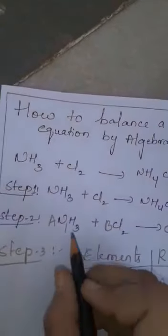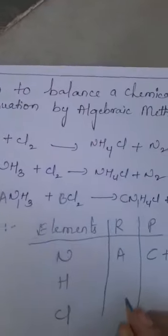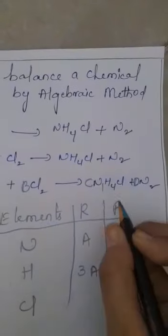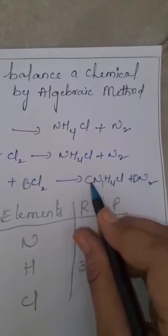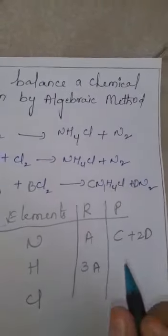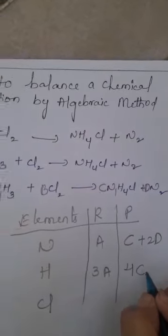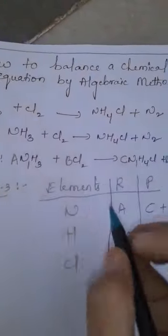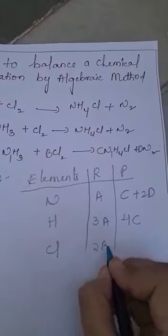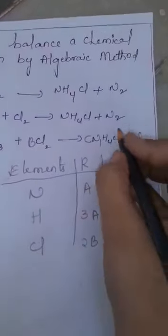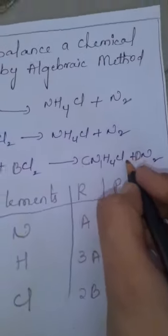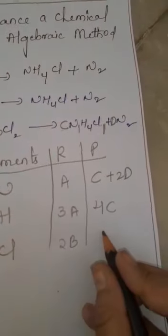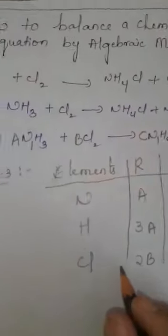Coming back to Hydrogen: here the number is 3, so A into 3 becomes 3A. On the product side, C into 4 becomes 4C. For Chlorine: B into 2 becomes 2B. On the product side, there is no number, so C into 1 becomes C.